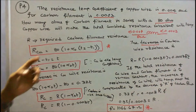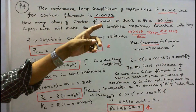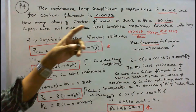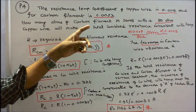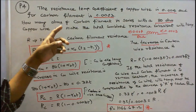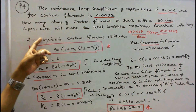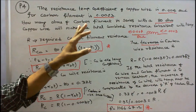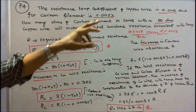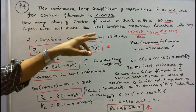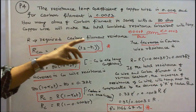Problem number 4. The resistance temperature coefficient of copper wire is 0.004 and for carbon filament is 0.0003. How many ohms of carbon filament in series with the 80 ohm copper wire will make the total combined resistance invariant with temperature? Because copper has a positive temperature coefficient and carbon has a negative temperature coefficient. Let R be the required carbon filament resistance.